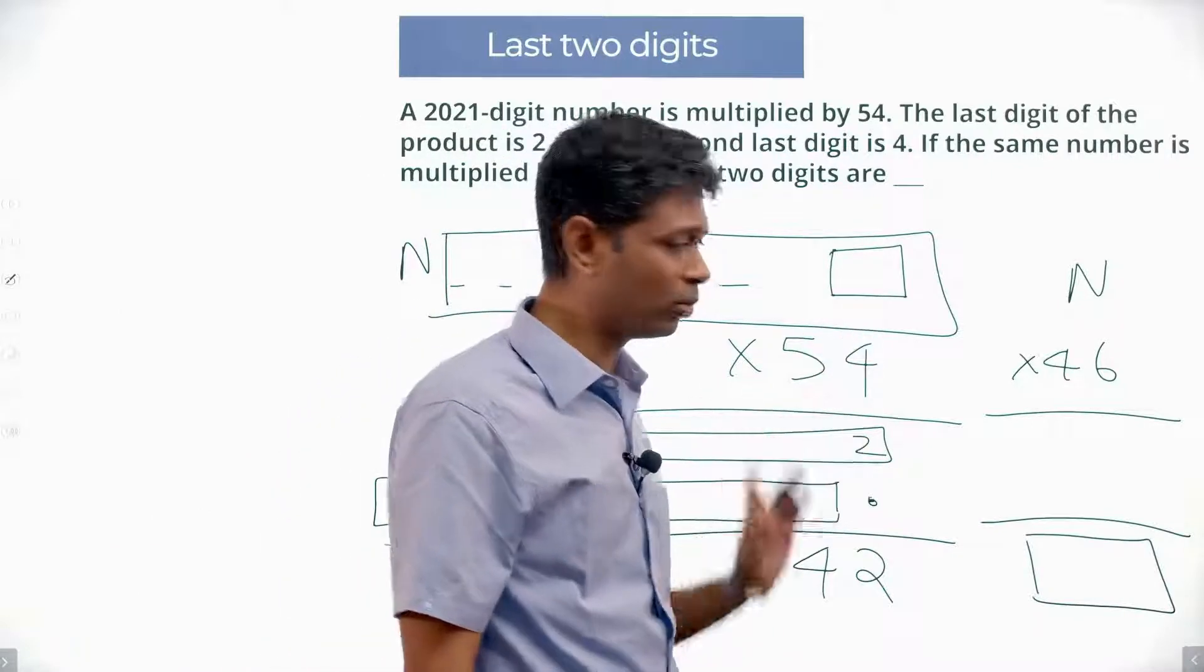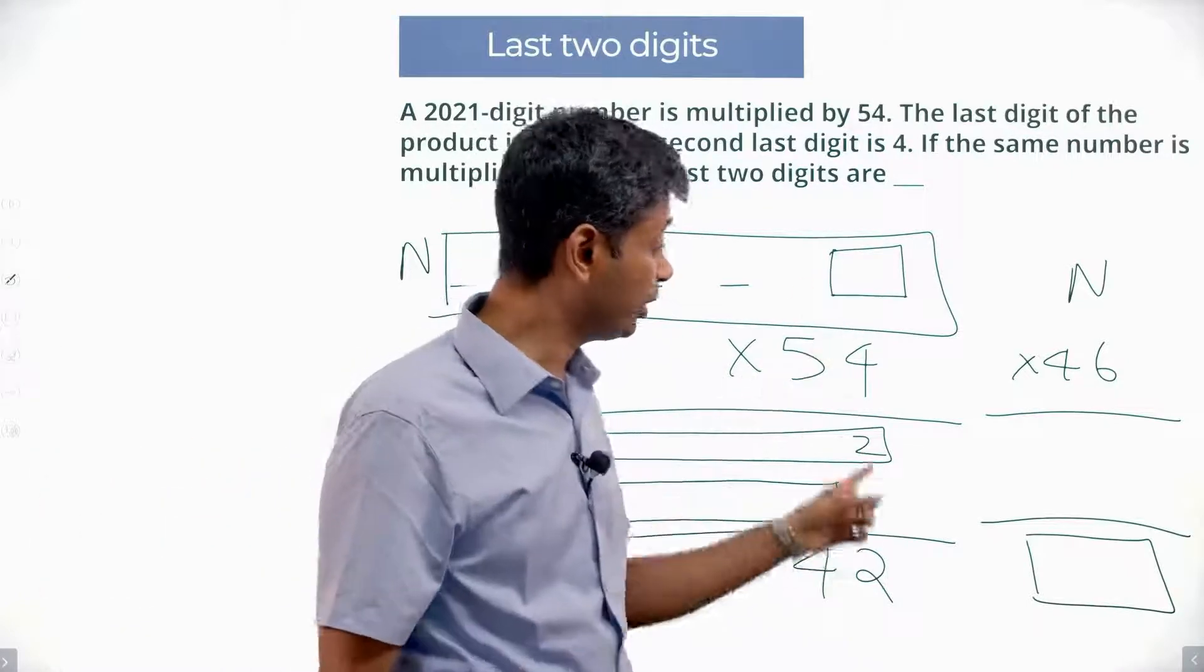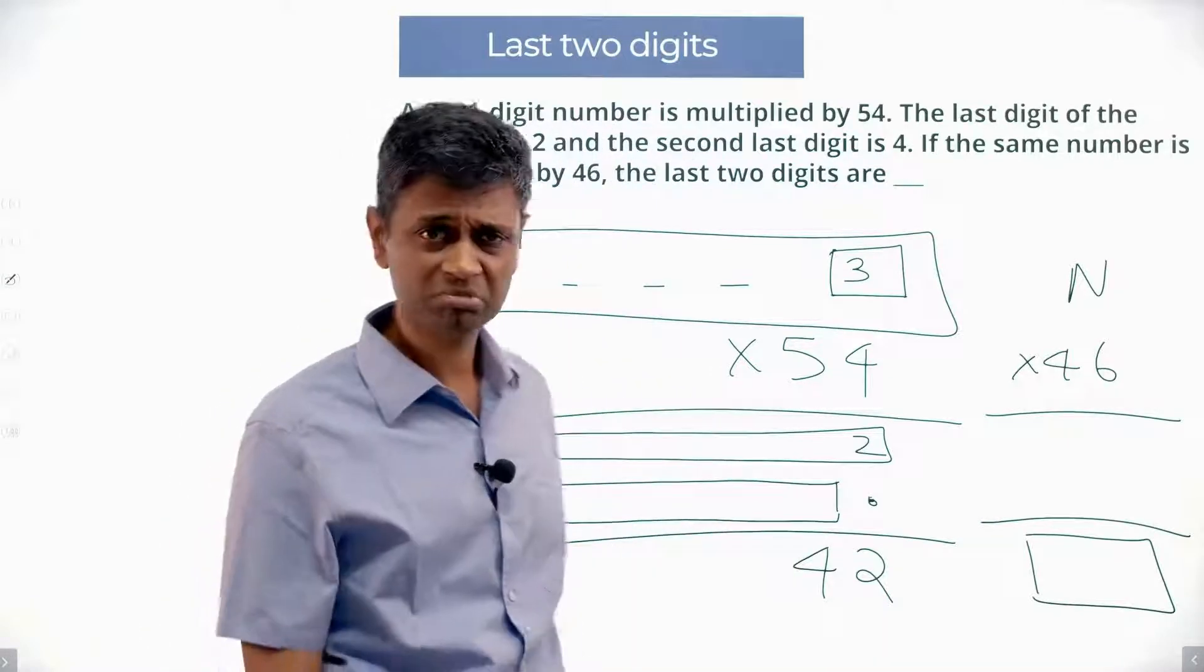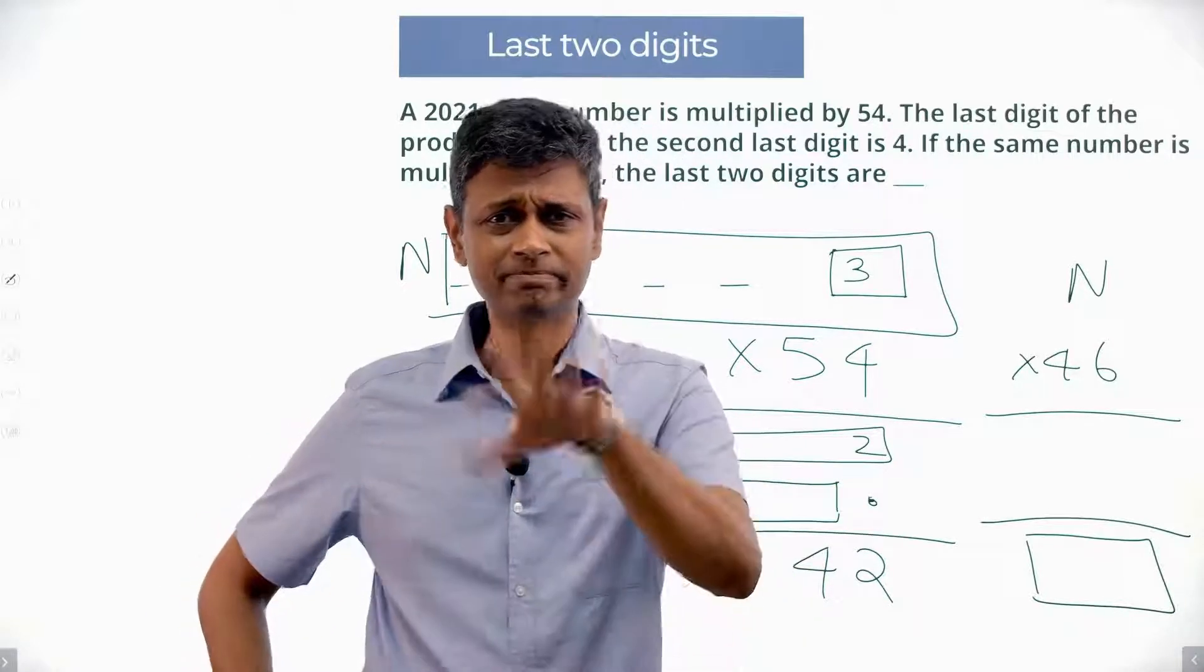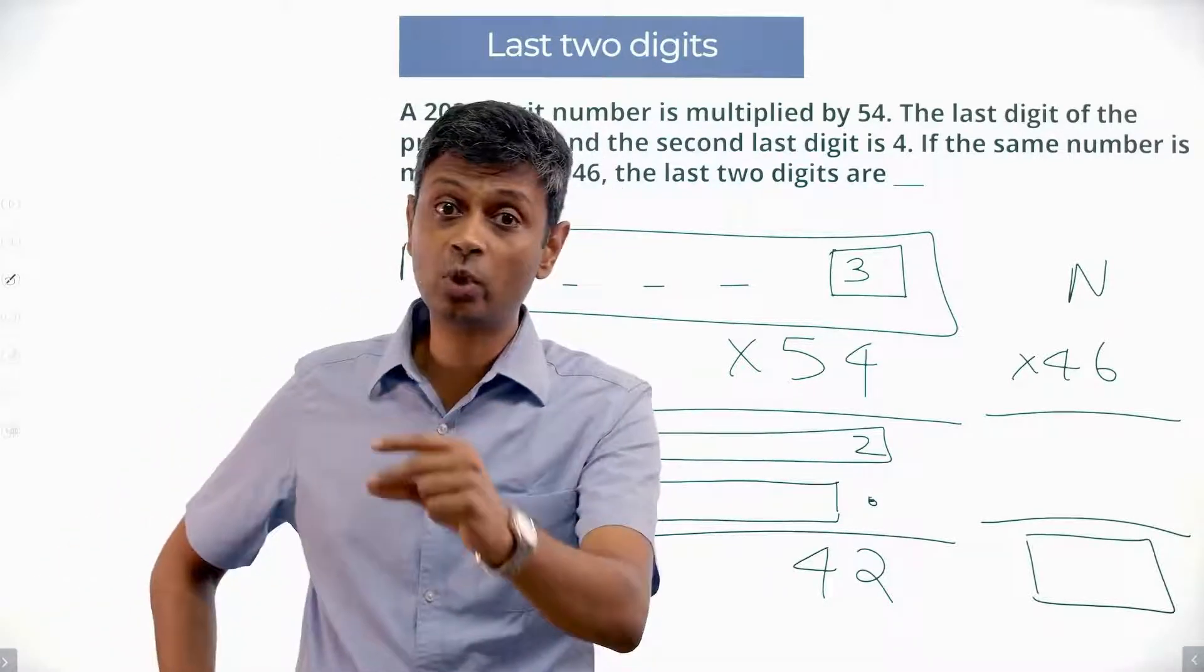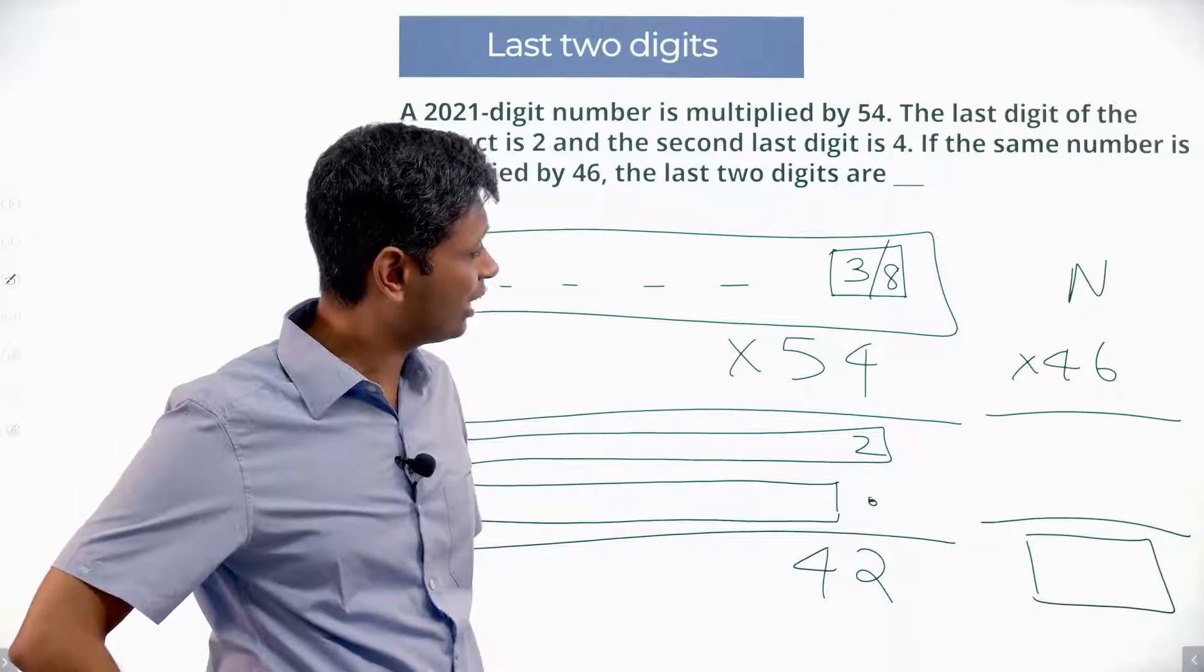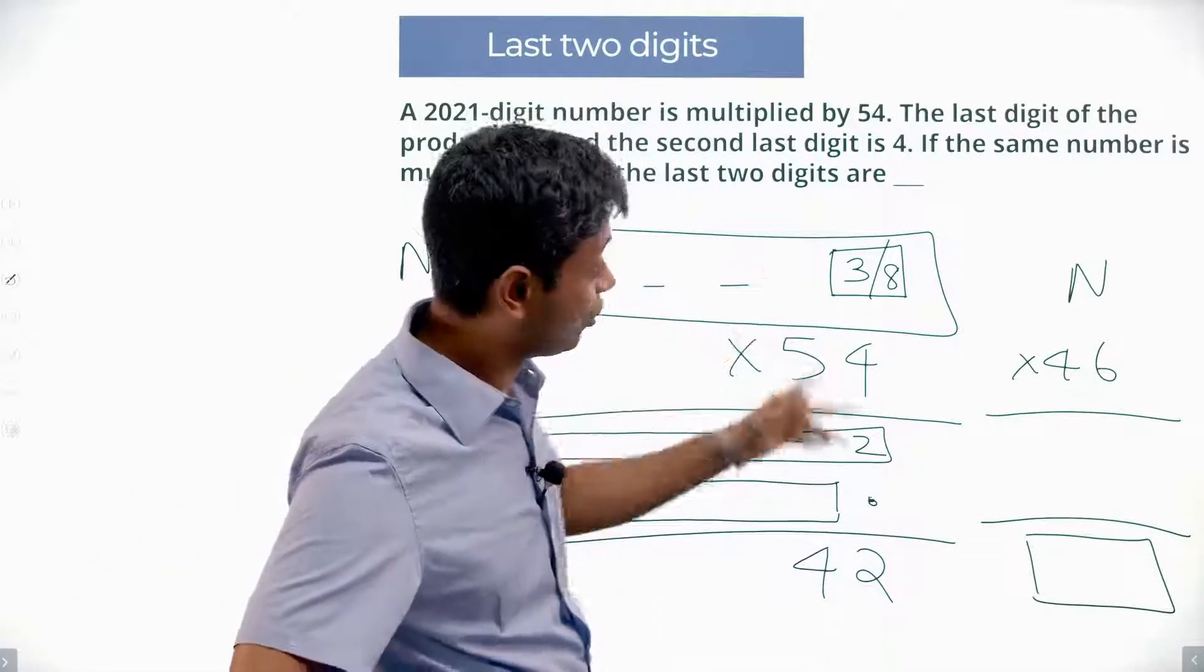The unit digit were 1, 4 into 1 would be 4. Doesn't work. 4 into 2 would be 8. Doesn't work. 4 into 3 would be 12. That works. It could be 3. 4 into 4 is 16, this will be 6. Doesn't work. 4 into 5, 20. Doesn't work. 4 into 6, 24. I want this digit to be 2. 4 into 7, 28. No. 4 into 8, 32. That works. So it could be 8. 4 into 9, 36. This has to be 6. That doesn't work. The units digit of our 2021-digit number is either 3 or 8.